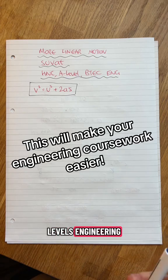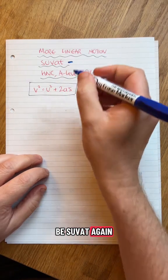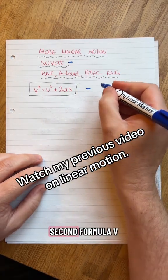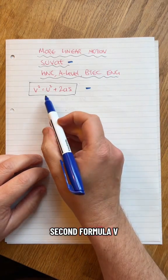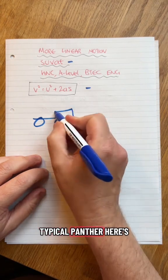Handy for HNC, A-levels, engineering, things like that. More linear motion. This one's going to be SUVAT again. Here's my number two assignment, second formula: v² = u² + 2as. Here's my car.